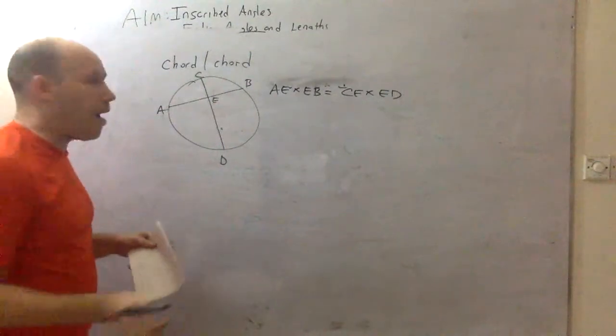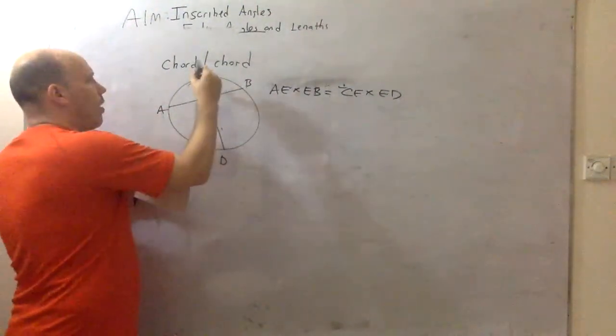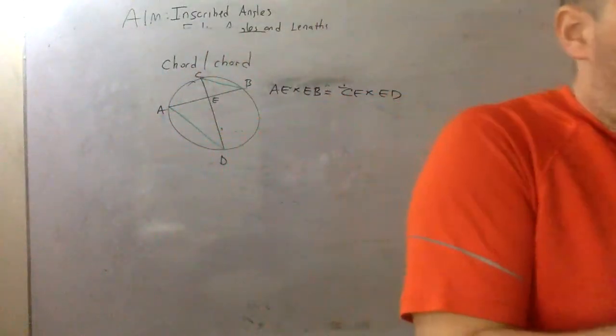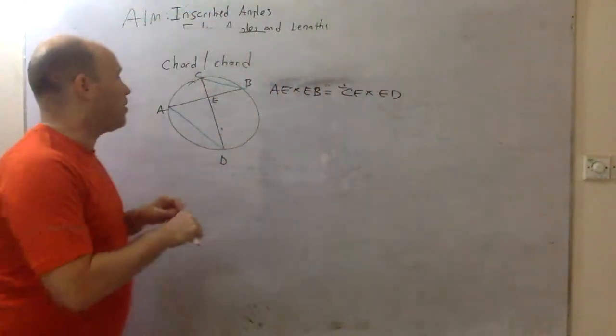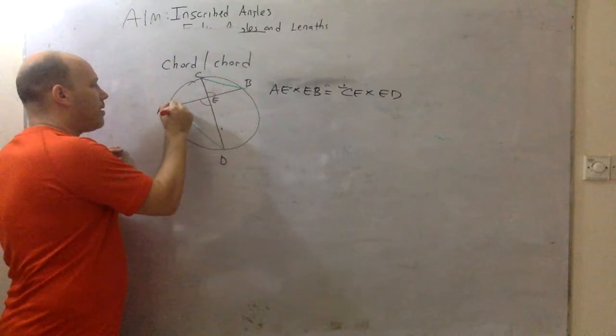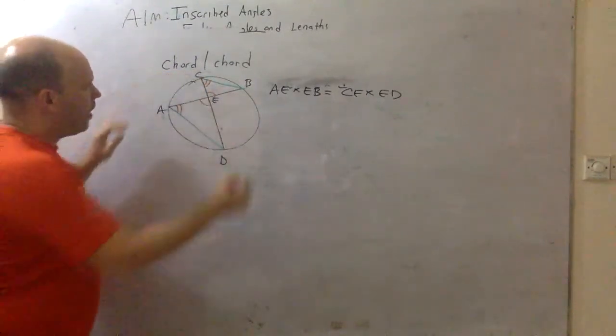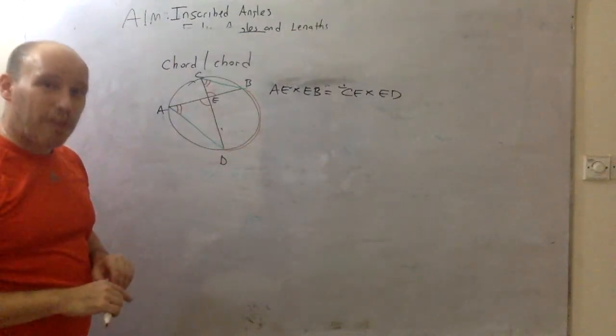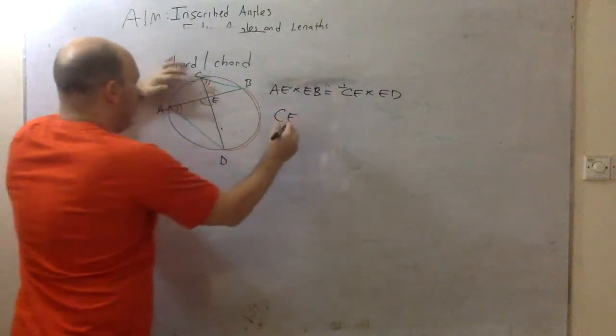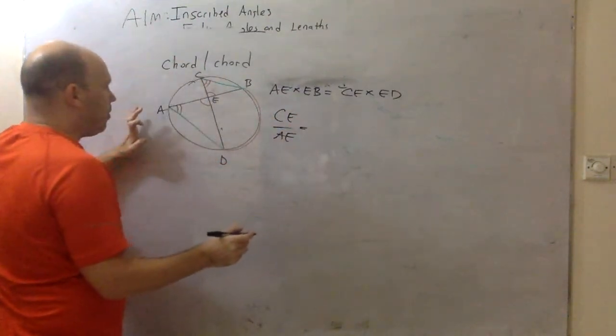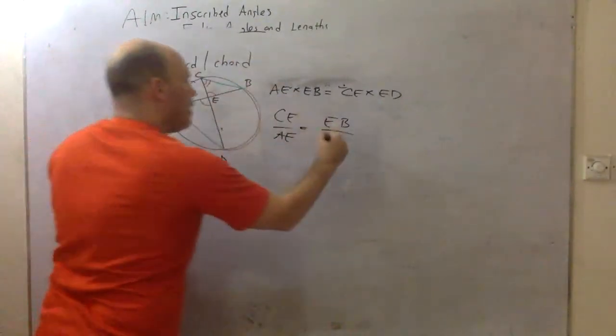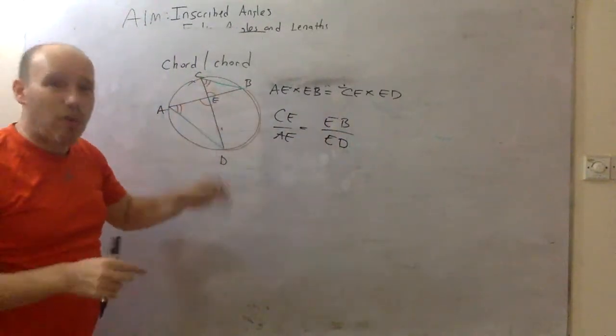How do we prove that? We're going to use similar triangles. First of all, I'm going to draw in CB and I'm going to draw in AD. The question is, are these triangles congruent? They're not necessarily congruent, but they are similar because this angle is congruent to this angle because of vertical angles. So we have similar triangles, let's get to work. Let's compare the upper triangle with the lower triangle. So CE over AE is equal to EB over ED.